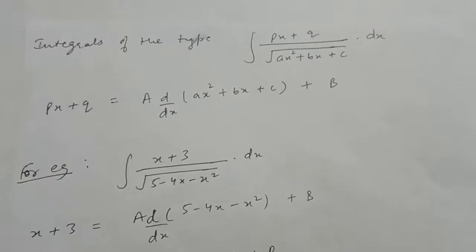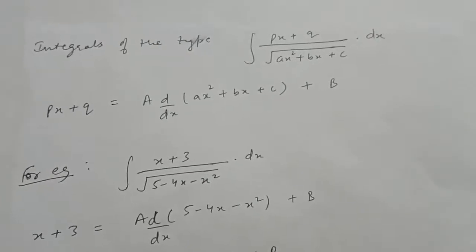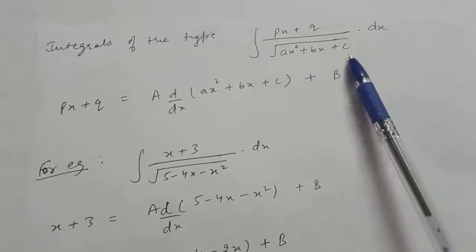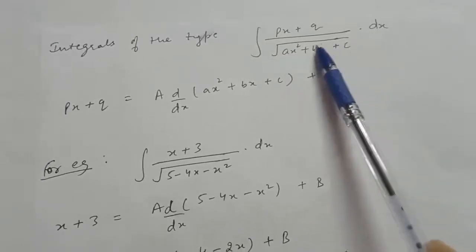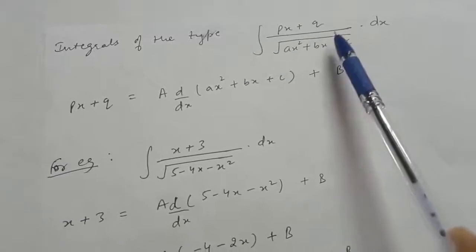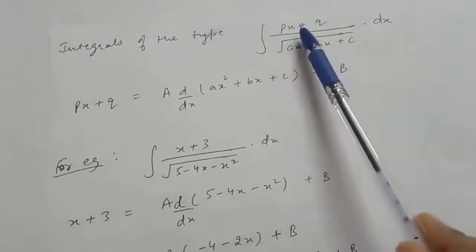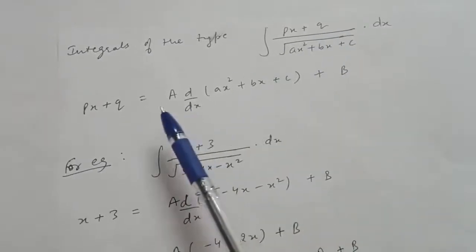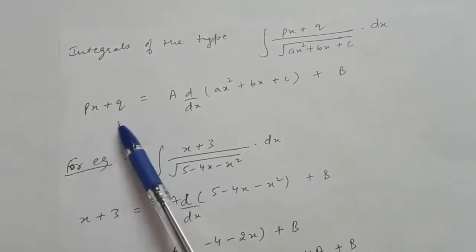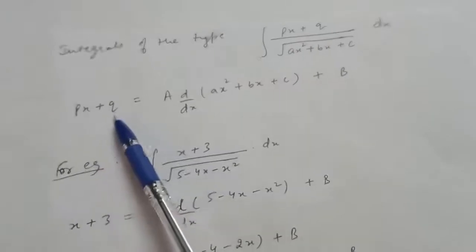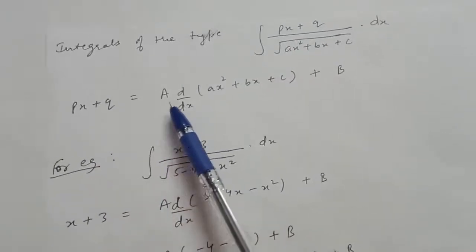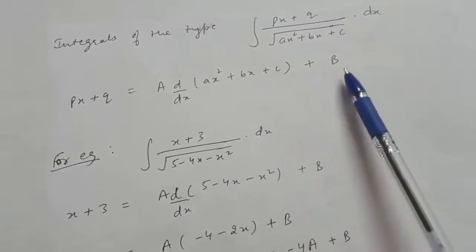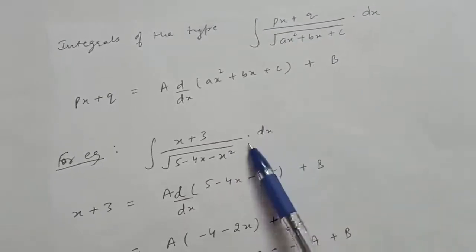For integrals of the type (px + q) upon root (ax² + bx + c) dx, the same procedure applies: write px + q as A times the derivative of the quadratic under the root plus B. Understand this with an example.